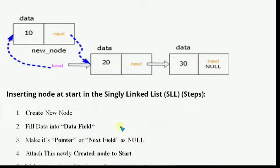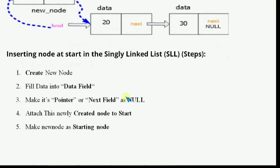Let's see the steps for creating a node in a singly linked list. First step: create a new node. Second step: fill data into the data field. Third step: make its next/link field null — when the new node is created, store null in its link/next part.